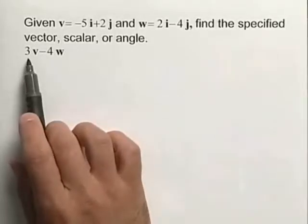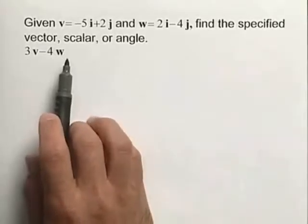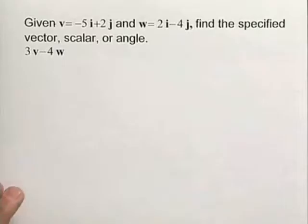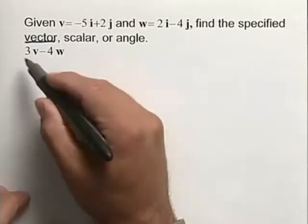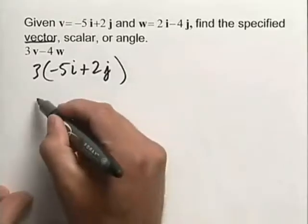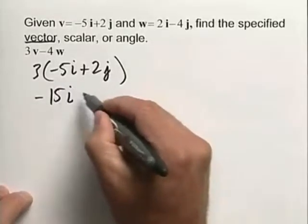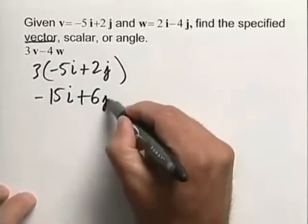For our purposes, we're looking for 3v minus 4w. This is going to create another vector for us. So let's look at the scalar multiplication first of 3v. This will be 3 times negative 5i plus 2j, and once we simplify this, we come up with negative 15i plus 6j.